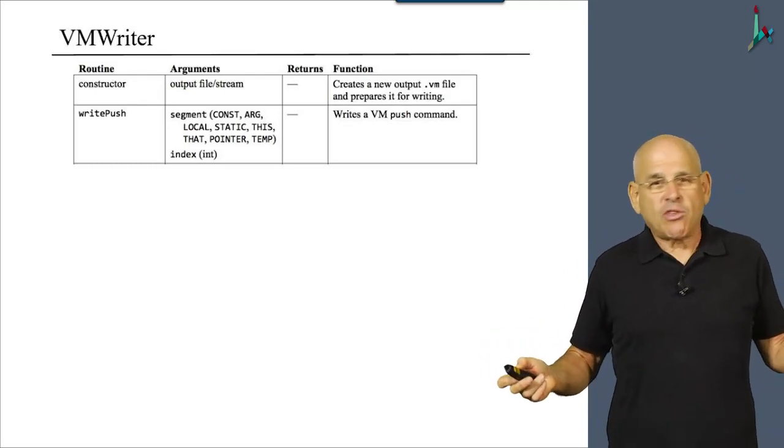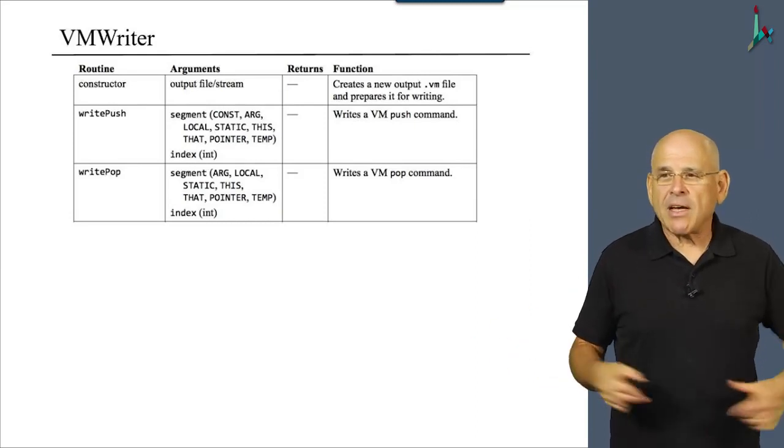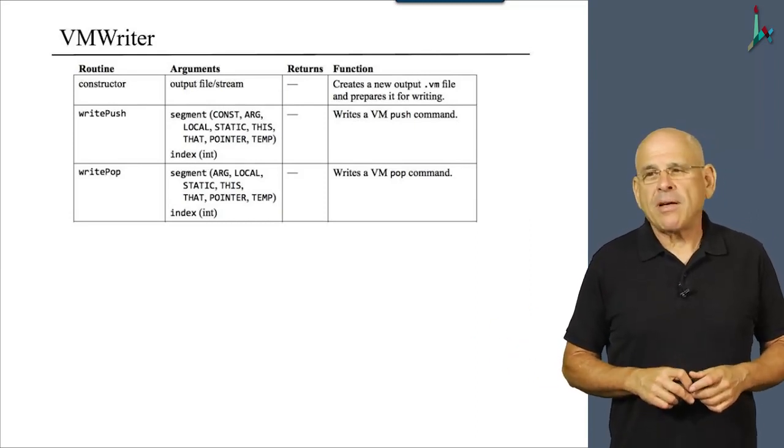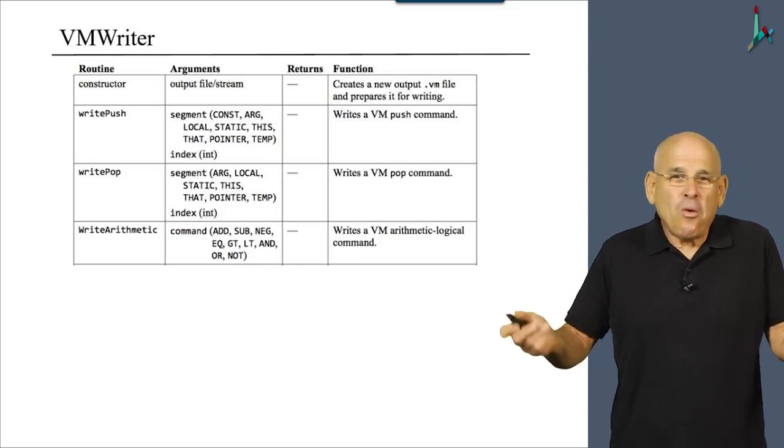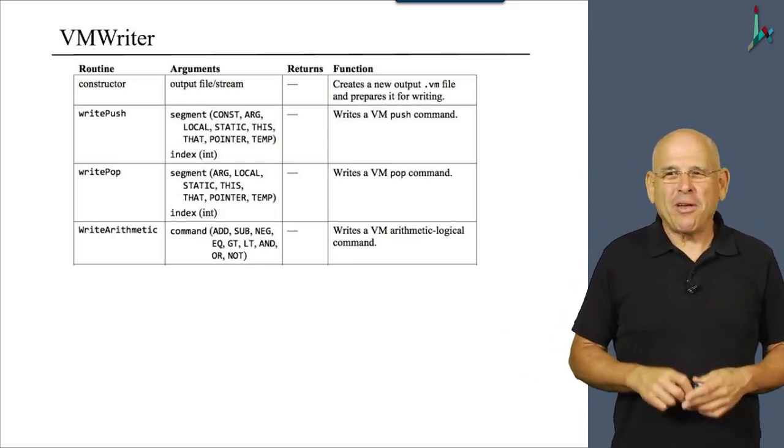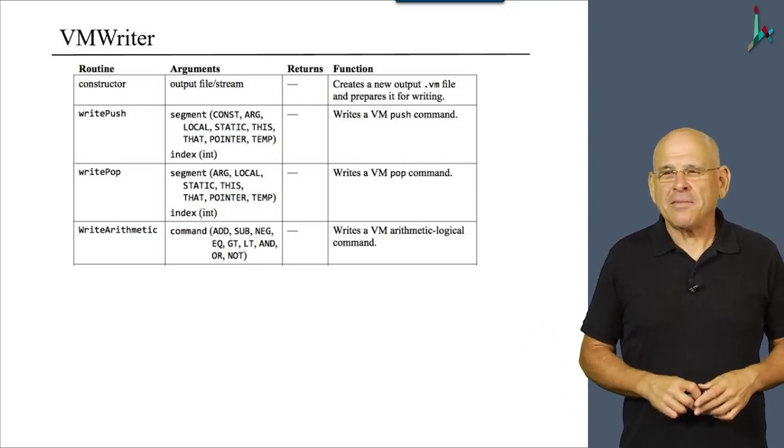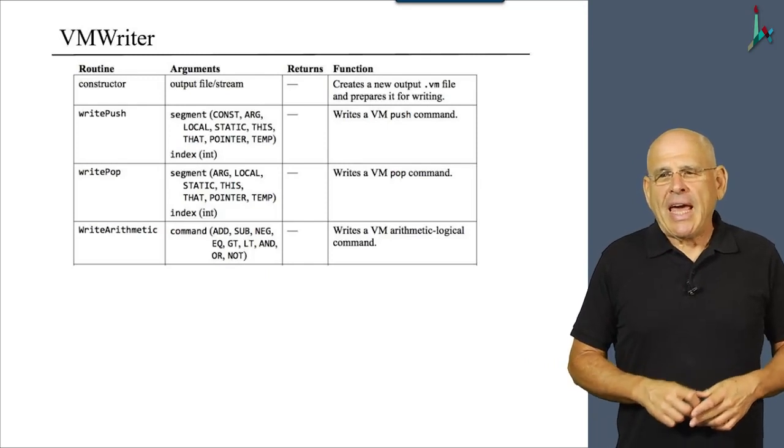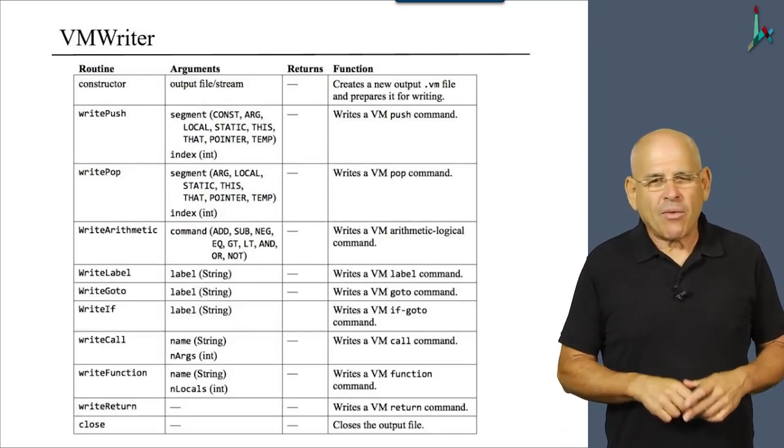So once you have these two pieces of information, this routine is trivial. Likewise, the write pop routine is also trivial. It writes a pop VM command. Write arithmetic command writes the command. So if the argument is sub, it will write sub, very straightforward.